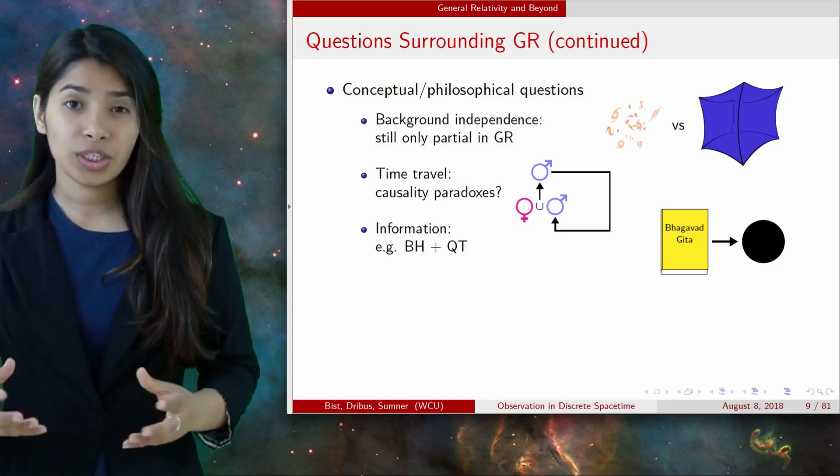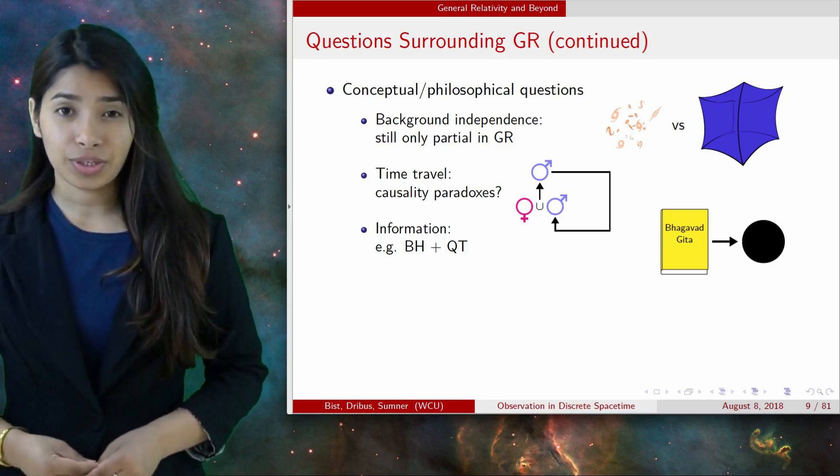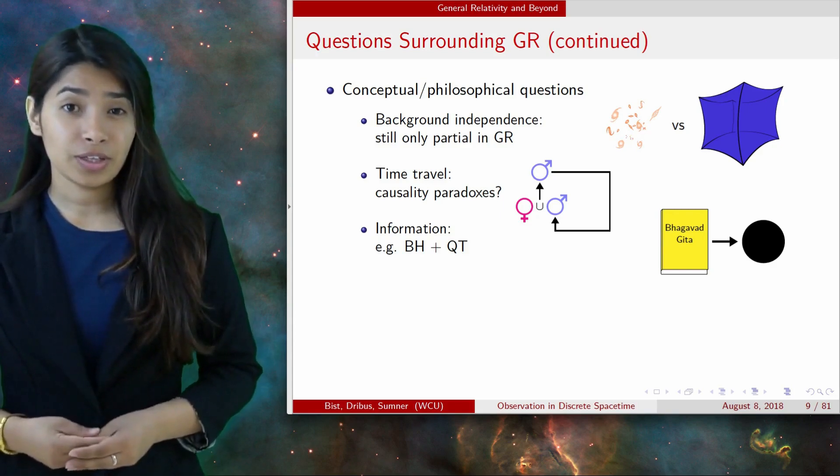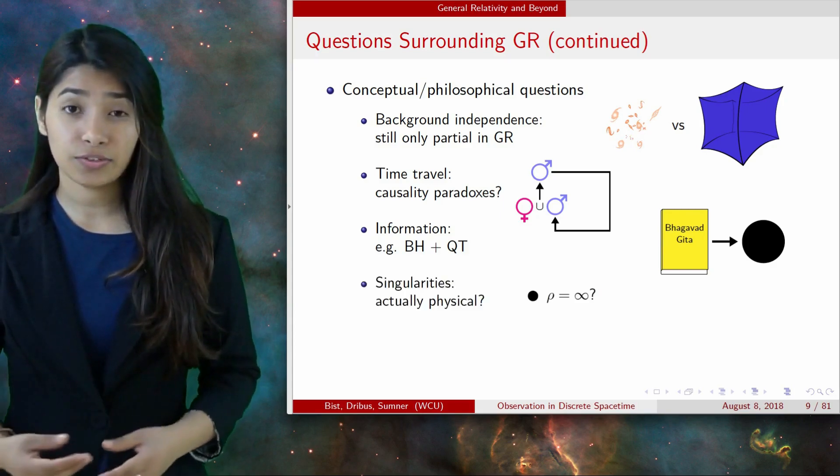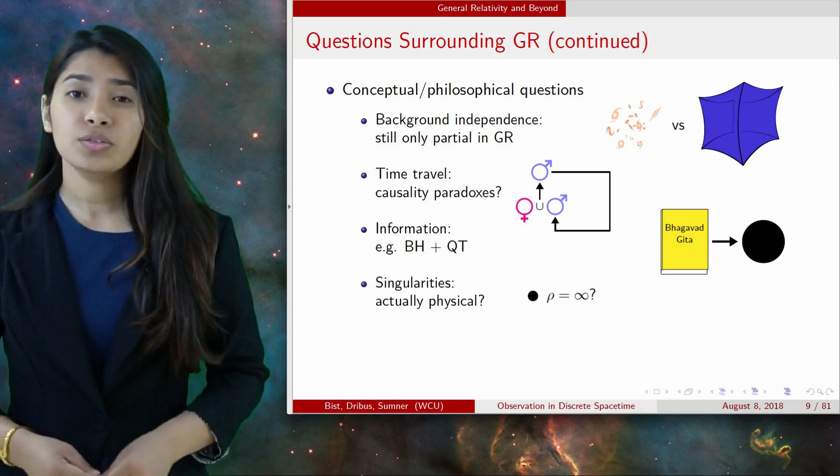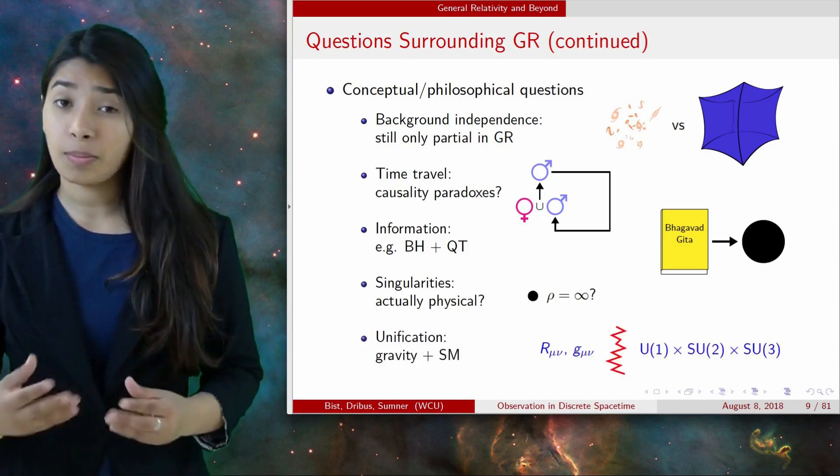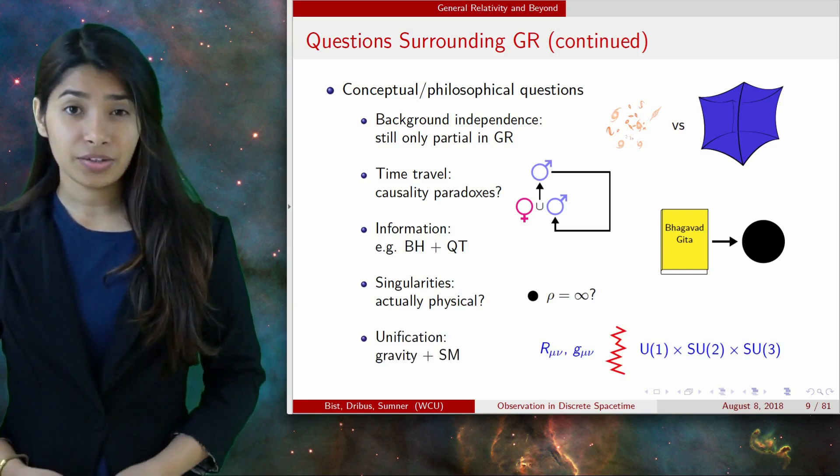If we look at Hawking radiation, we can't hide the problem behind the event horizon because the black hole will eventually evaporate. So there is a question, should we believe singularities are actually physical? And there is also a problem with unification, combining gravity with standard model of particle theory.